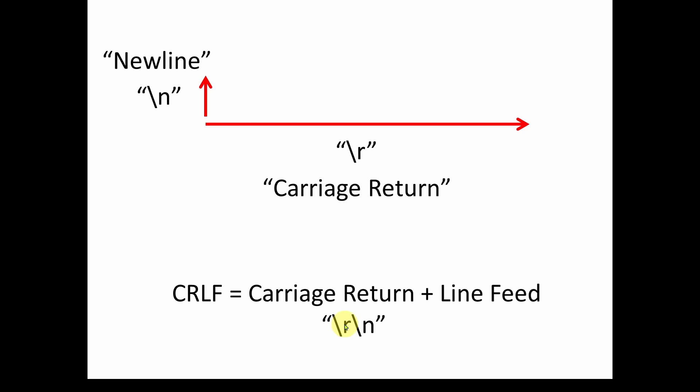So carriage return line feed, and we're going to access these in our code. We're going to have to know what's being sent and if we're going to strip them off or use them or whatever.